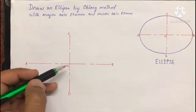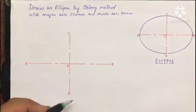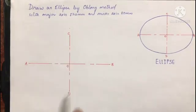The minor axis is 80 millimeter, 40 millimeter above and 40 millimeter below. Now we draw a rectangle using these two axes.